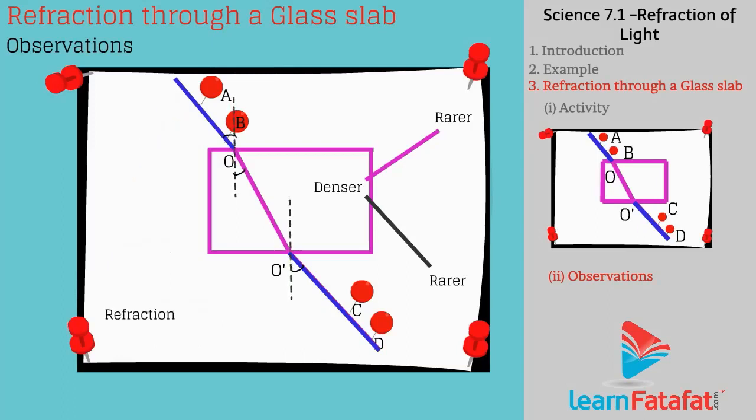Refraction of light occurs because of the fact that speed of light changes when it enters from one transparent medium to another. In rarer medium light travels with high speed while in denser medium it travels with slow speed and hence change the direction.